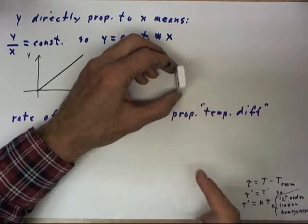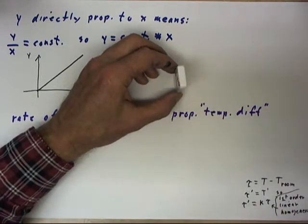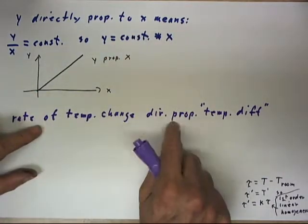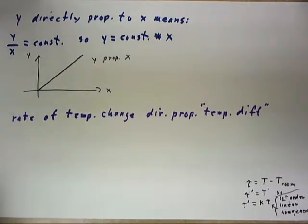If it was at 92 degrees, it would be 20 degrees above room temperature and it would cool at twice the rate, assuming that the rate of change is directly proportional to temperature difference.